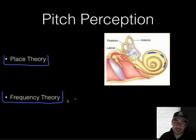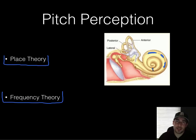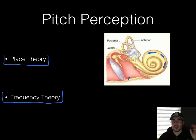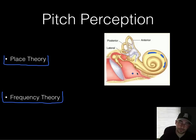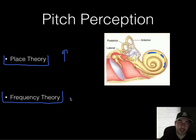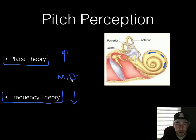Since place theory couldn't explain low frequencies, frequency theory was proposed. Frequency theory says everything in the cochlea is vibrating at the same time, and based on the amount of those vibrations, that information is sent down and your brain interprets it. It's probably a combination of both: place theory helps explain high frequencies, frequency theory helps explain low frequencies, and a combo of the two covers the middle range.